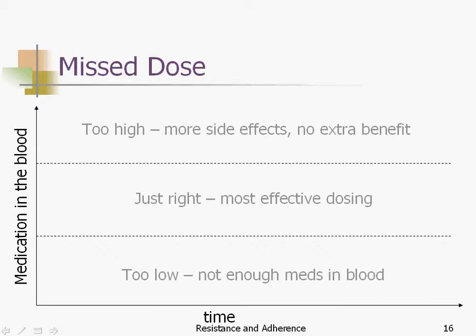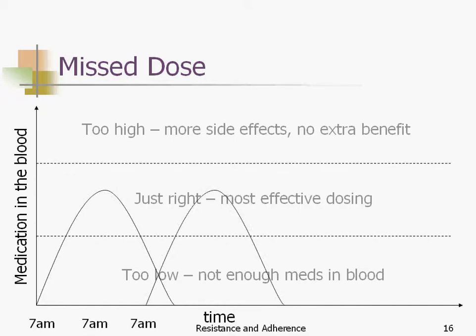Let's say somebody misses a dose — it's not the end of the world, it happens. At 7am one day they take it, but the next 7am they don't remember until the following morning and take it then. What we have is a window in the too-low zone where there's not enough medication in the blood. It's a pretty small window, and it's different for every medication, but this window is a time in which HIV can reproduce.